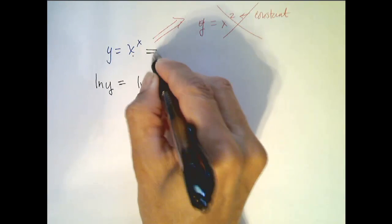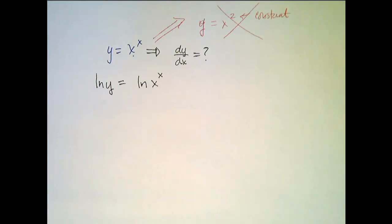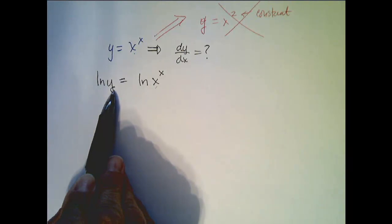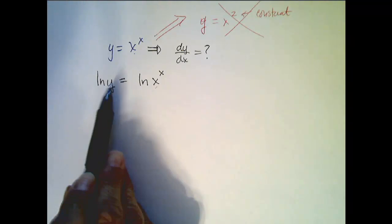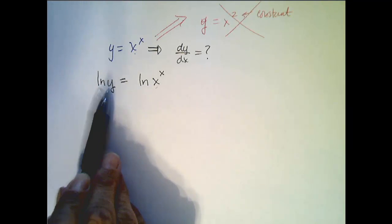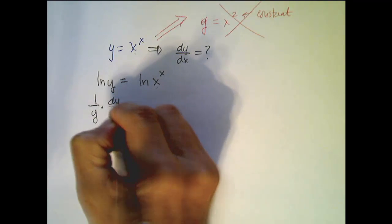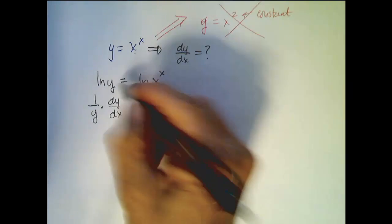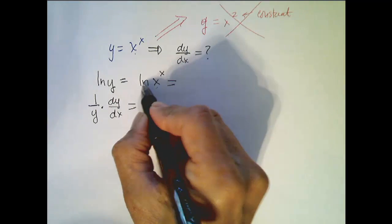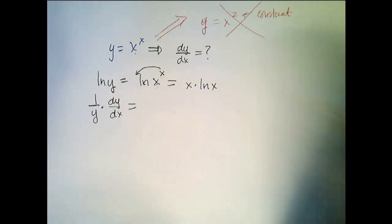We're going to apply the technique of logarithmic differentiation. Step 1 is to take the natural log of both sides: the natural log of y equals the natural log of x to the x. We want to find the derivative of y with respect to x. Now, since we have the natural log of x raised to a power, we can move that power down in front, giving us x times ln of x.